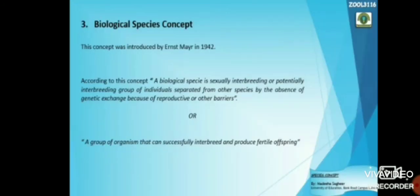Biological species concept. This concept was introduced by Ernst Mayr in 1942. According to this concept, a biological species is a sexually interbreeding or potentially interbreeding group of individuals, separated from other species by the absence of gene exchange because of reproductive or other barriers. In other words, a species is a group of organisms that can successfully interbreed and produce fertile offspring.